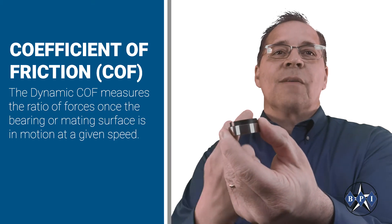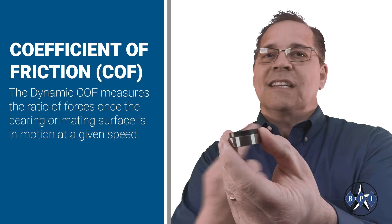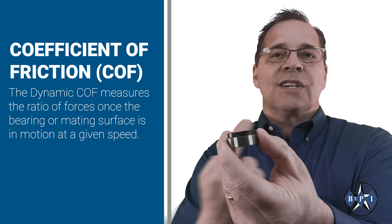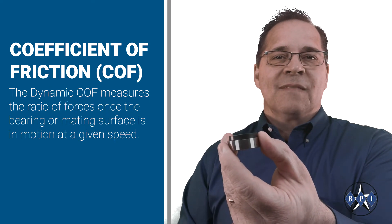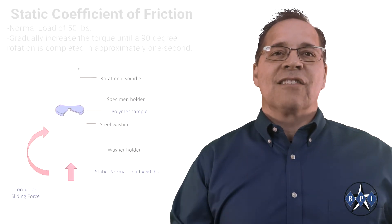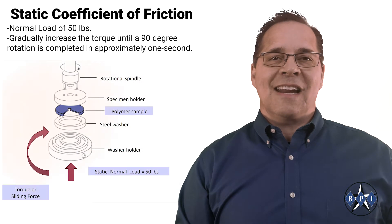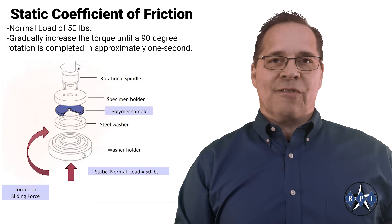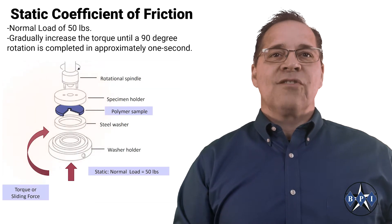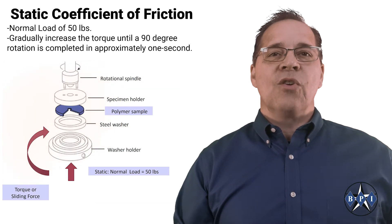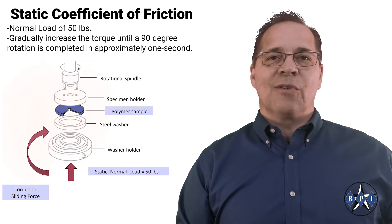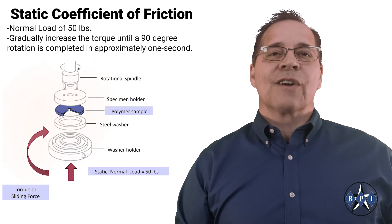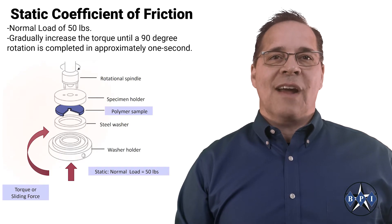The dynamic coefficient of friction measures the ratio of forces once the bearing or the mating surface is already in motion at a given speed. Typically, the static coefficient of friction is larger than the dynamic coefficient of friction because you must overcome the normal force with a more significant initial force to overcome the system at rest.